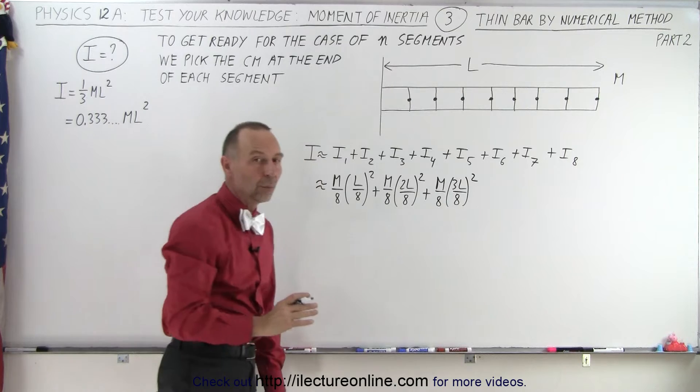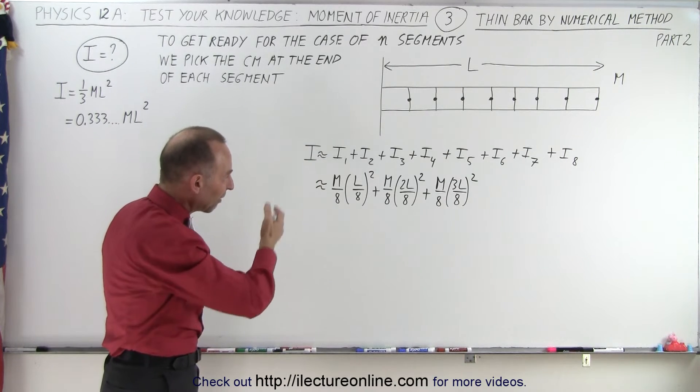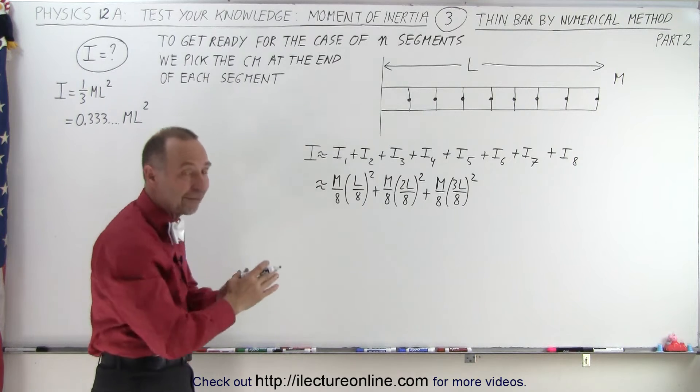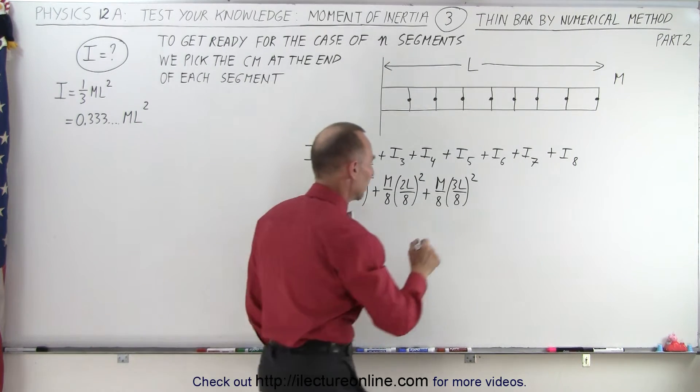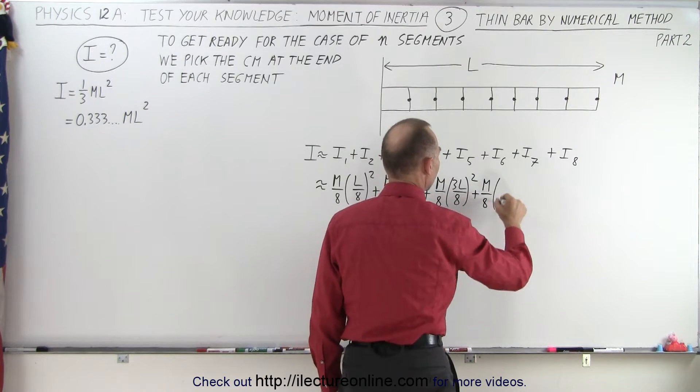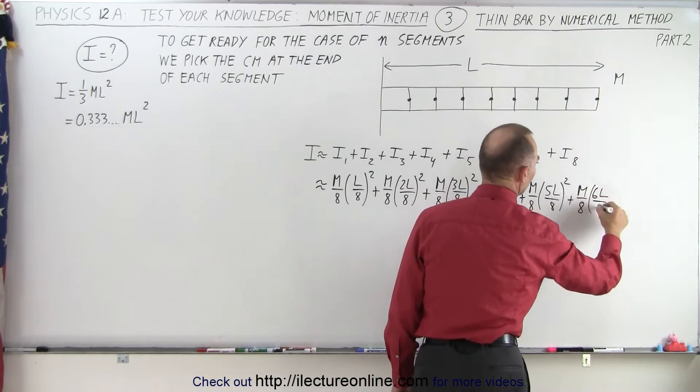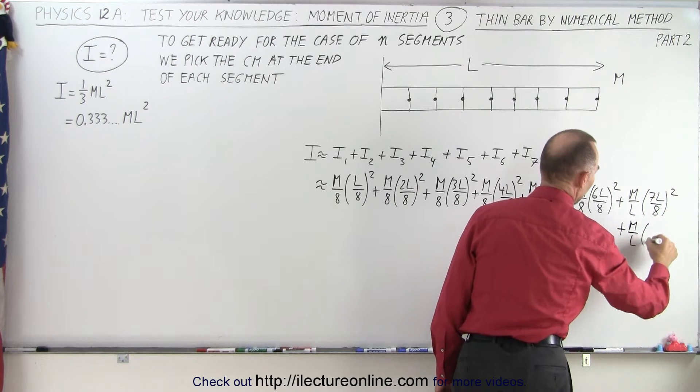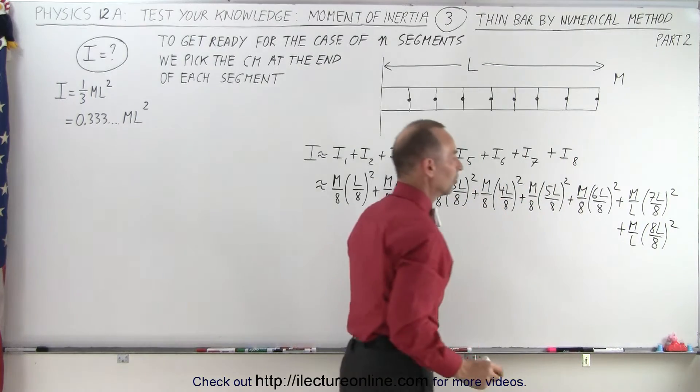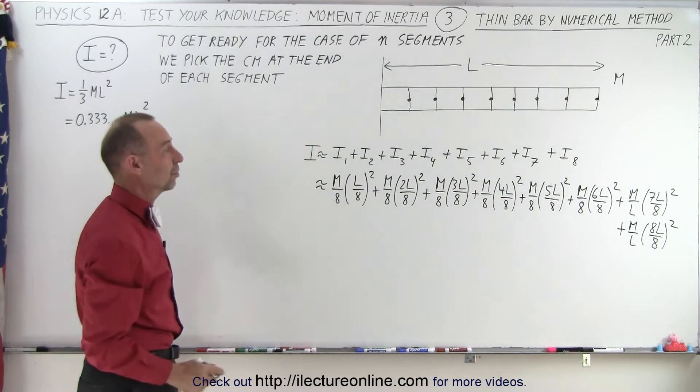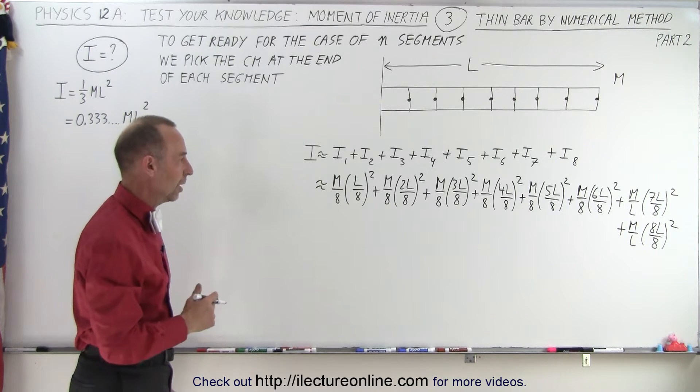And you can see why we want to do it this way because we have a much better segmentation and ways to summarize it when we have n segments. You'll see that coming up next. So we'll continue this, plus m over 8, finally, plus m over 8 times 8l over 8 quantity squared. So you can see now that it's very easy to find the pattern no matter how many segments you have, and then you can sum them all up.